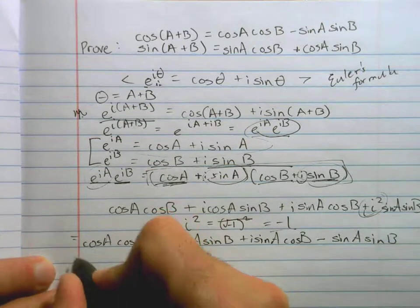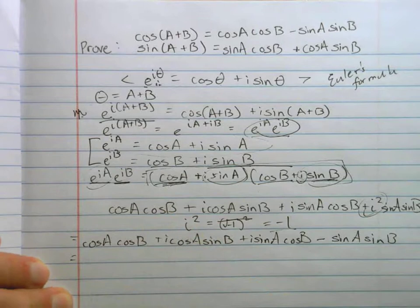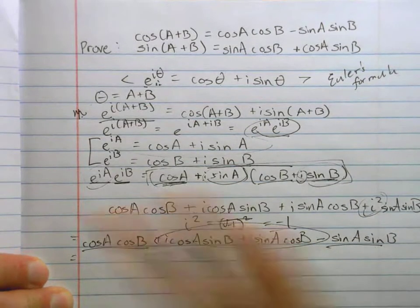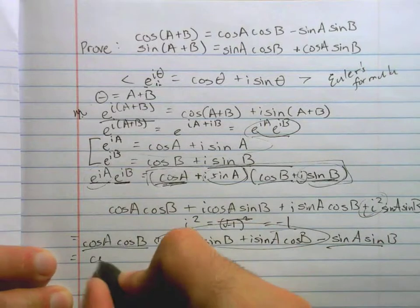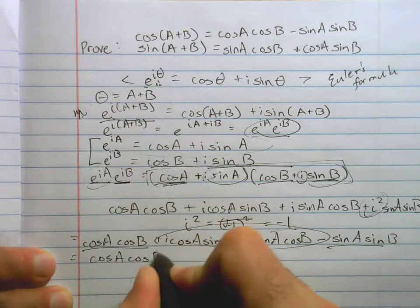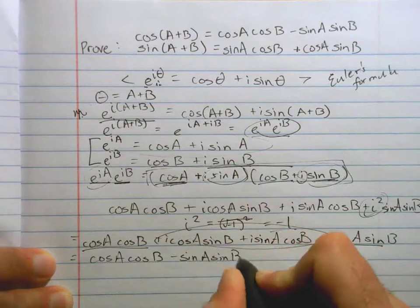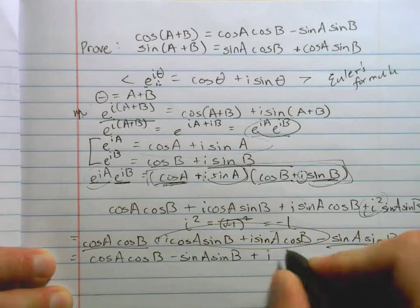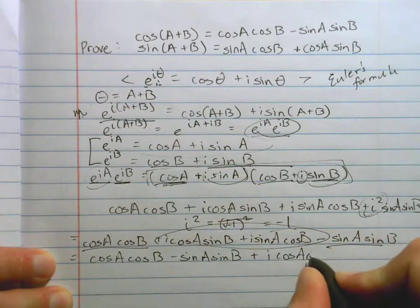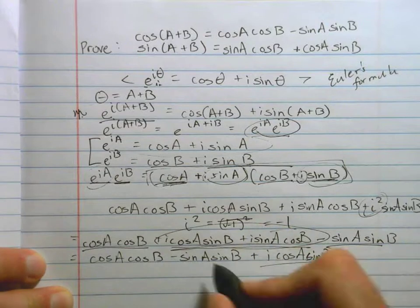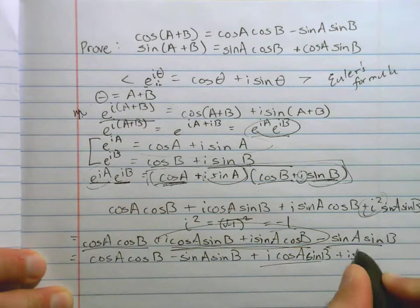Now I'm going to rearrange the terms, right? Like I've got some real stuff, and then I've got some imaginary stuff. Let's just write the real stuff next to each other. Cos a, cos b minus sine a sine b plus i cos a sine b. Right? This stuff now. Plus i sine a cosine b.